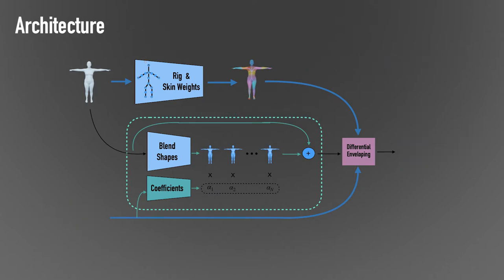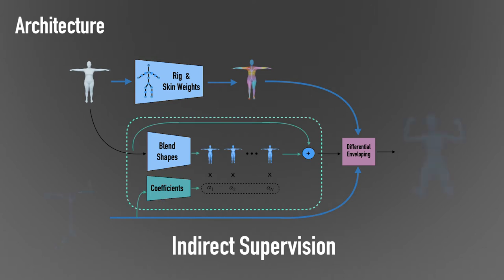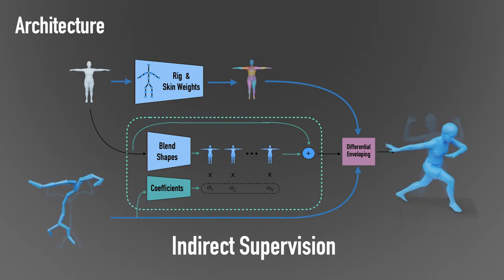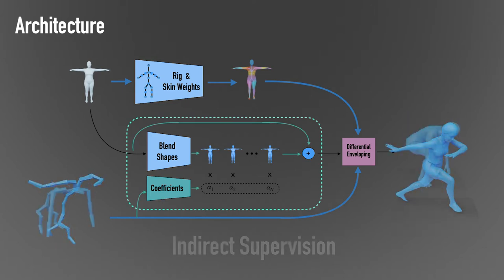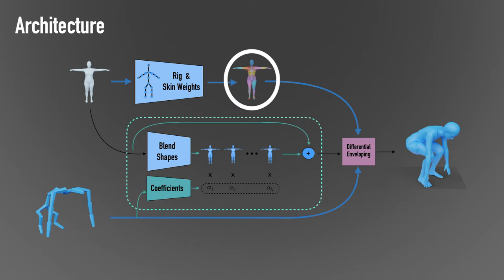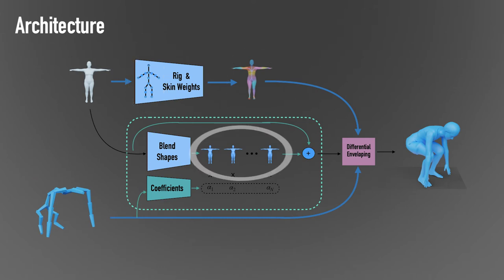Our network is trained on articulated shapes with the same articulation structure and learns via indirect supervision. During training, the network observes deformed shapes and learns to infer a set of skinning and rigging parameters that conform with the target skeletal structure, as well as a joint-dependent blend shape deformation, thus bypassing the need to provide consistent ground truth for the rigging, skinning, or blend shape parameters.